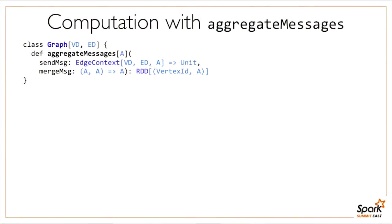The last operation I'll talk about is aggregate messages, which enables GraphX to express graph algorithms. It takes two user-defined functions: sendMessage and mergeMessage. The first, sendMessage, has the opportunity to send messages along edges and gets an edge context containing a triplet—the edge along with its source and destination vertex properties—and is able to send messages in both directions. The second function combines messages sent to the same vertex. This operation returns an RDD containing a combined message for every vertex that received a message.